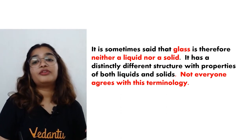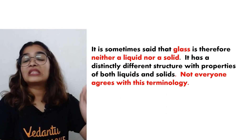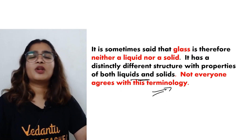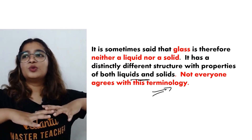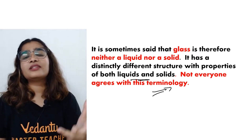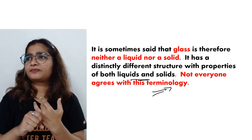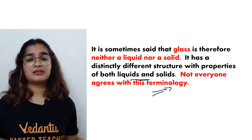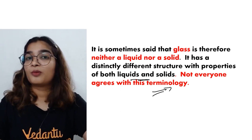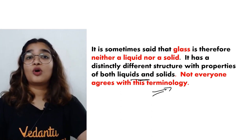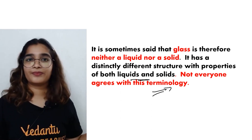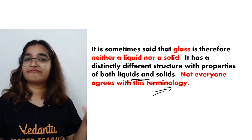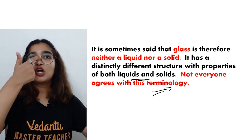Glass has a distinctly different structure with properties of both liquids and solids. Terminology is still debated, and there is much more to learn about its thermodynamic properties. What we can say is that you cannot call it a crystalline solid — it is best described as an amorphous solid or a supercooled liquid.